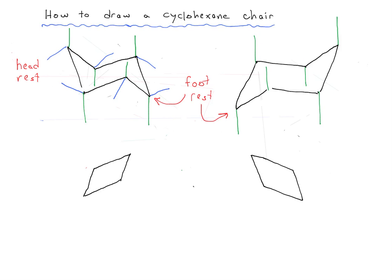Just like we did last time, we now put in the equatorial groups. If the axial is pointing down, the equatorial points somewhat up. If the axial is pointing straight up, the equatorial points somewhat down — somewhat up, somewhat down, somewhat up, somewhat down. And before you know it, you've actually drawn the mirror image of the chair.